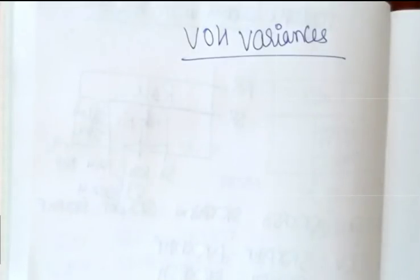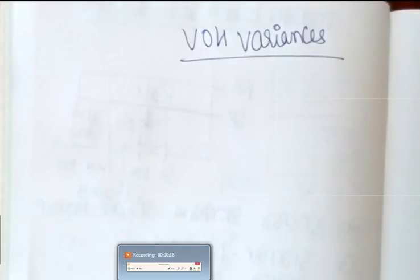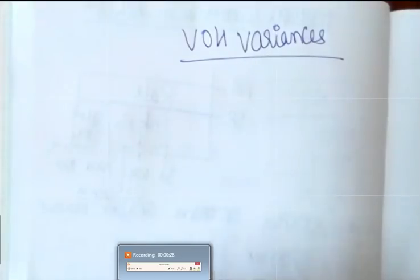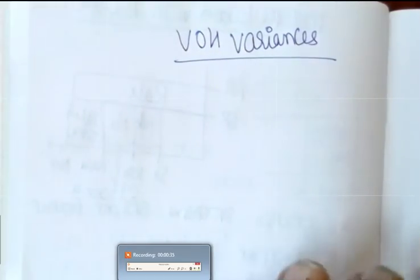Good morning friends. I'm recording this video to provide the next level of standard costing. We had done earlier recordings on material variances and labor variances — I would suggest you go through those links first, then refer to this video. The links are provided in the description. Now coming to VOH variances — VOH variances are predominantly like labor variances.